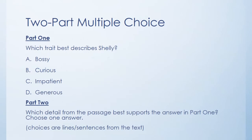This is an example of the two-part multiple choice question. After reading a passage, this two-part multiple choice question will ask students first to select an answer in part 1 based on the passage they read. In this example, students are asked to select a character trait which best describes the main character from the story. Next, they are asked to select a detail from the passage that supports the answer they chose in part 1. Although not pictured on this slide, the answer choices in part 2 are lines or sentences from the text. It is important to note that students may be asked to select two answers in part 2 on some questions, so it will be very important for students to carefully read the questions.